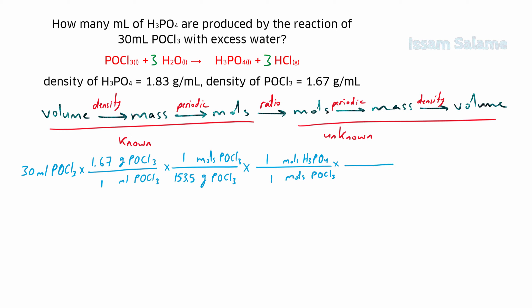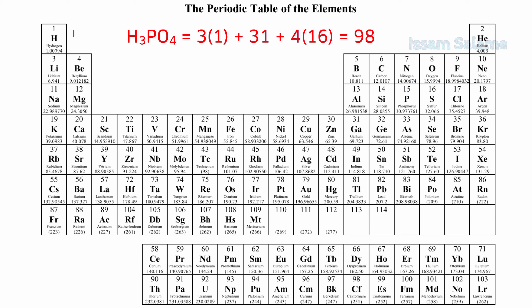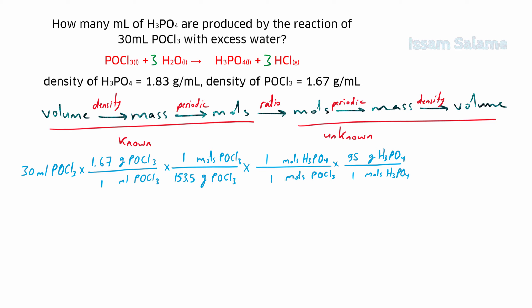Then we multiply by another fraction to convert moles of H3PO4 to mass of H3PO4: moles of H3PO4 goes in the denominator and grams of H3PO4 in the numerator, with 1 next to moles. From the periodic table, hydrogen is 1, phosphorus is 31, and oxygen is 16, giving a molar mass of 98 g/mol for H3PO4, so we put 98 next to grams of H3PO4.